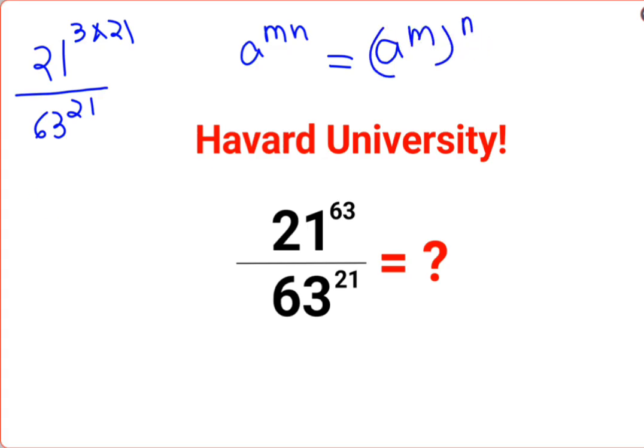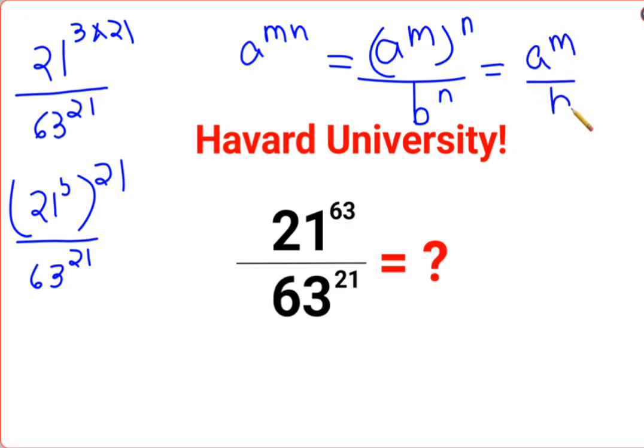So we can write this as 21 raised to 3, the whole raised to 21, upon 63 raised to 21. And if we have B raised to N divided by this, we can write it as A raised to M upon B, the whole raised to N, which is the same thing which I will do.